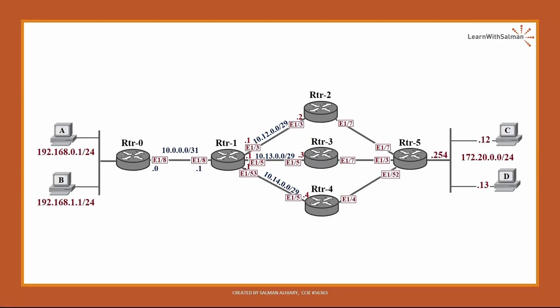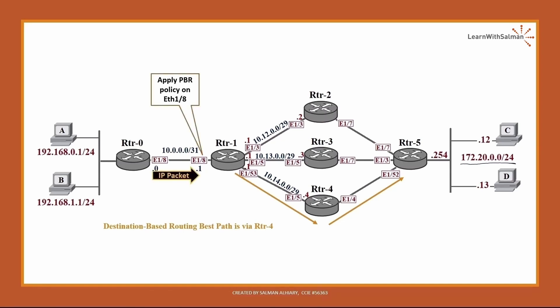Now let's apply this in the lab. We have routers 0, 1, 2, 3, 4, 5 and hosts A, B, C, and D. What we are going to do is apply PBR on router 1. We need to send traffic from host A and B to host C and D, then apply the PBR on interface Ethernet 1/8. This is the destination-based routing best path, which is via router 4 for subnet 172.20.0.0/24.